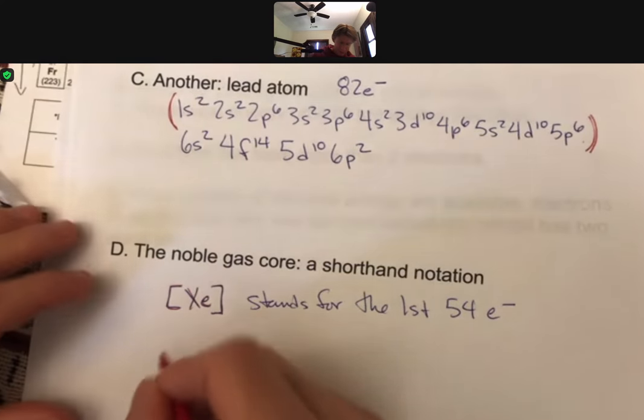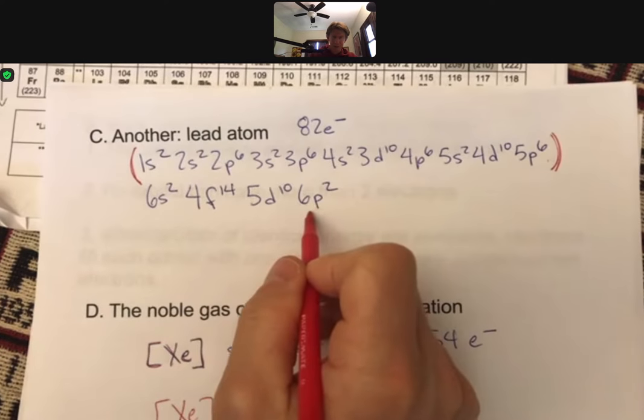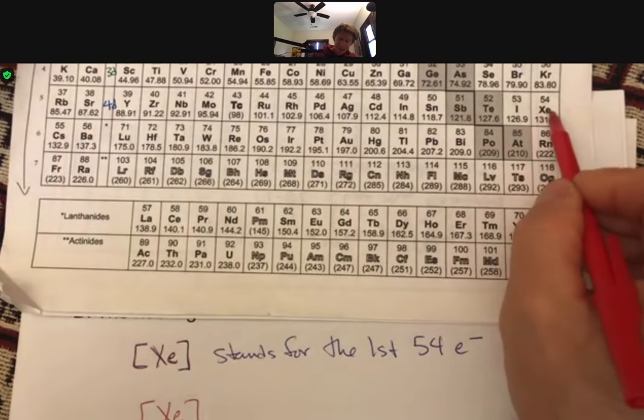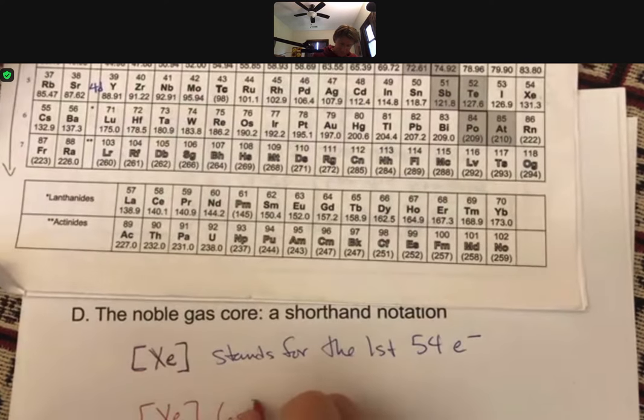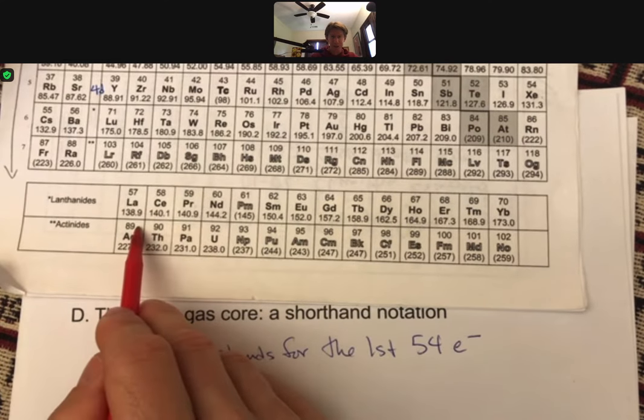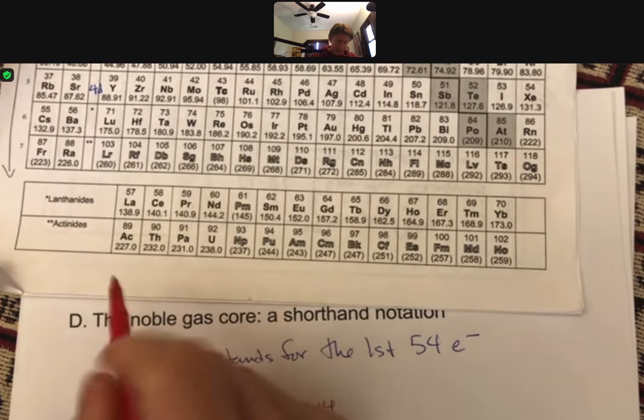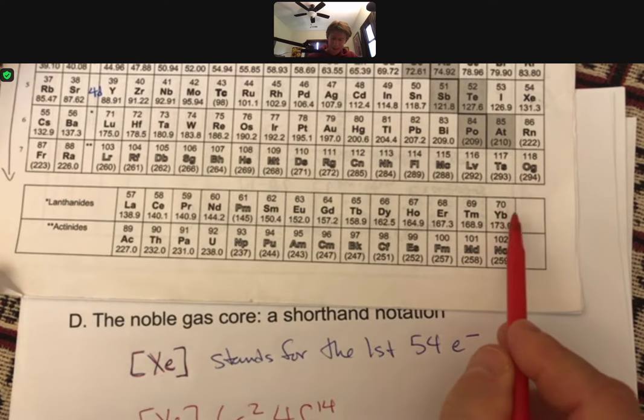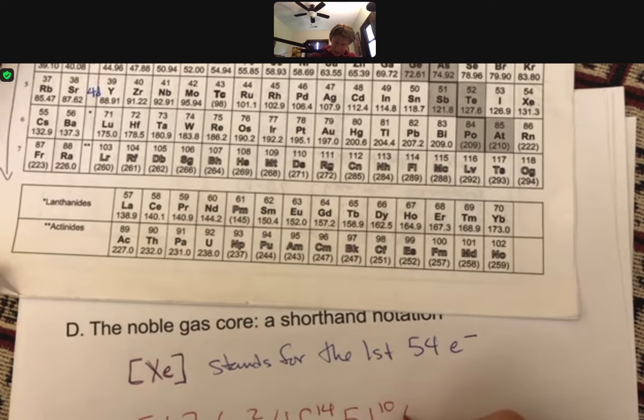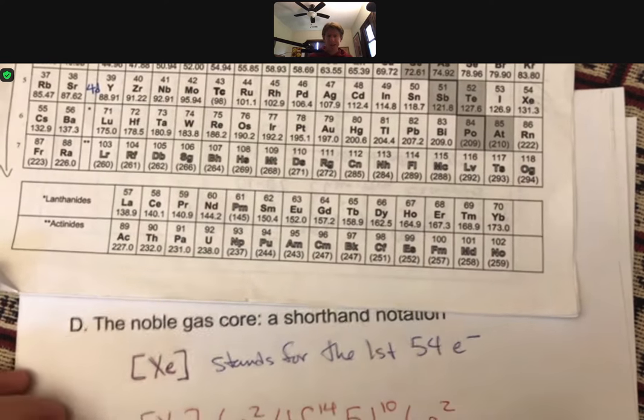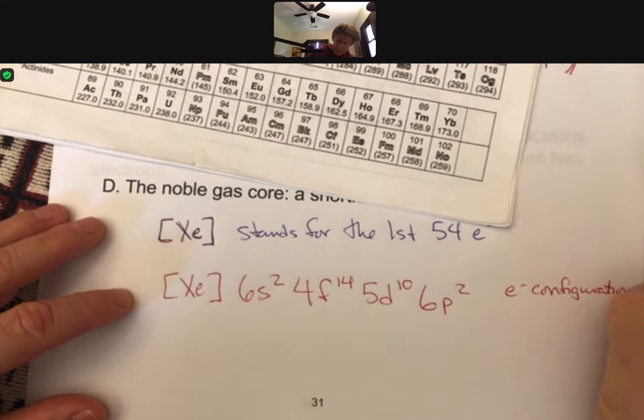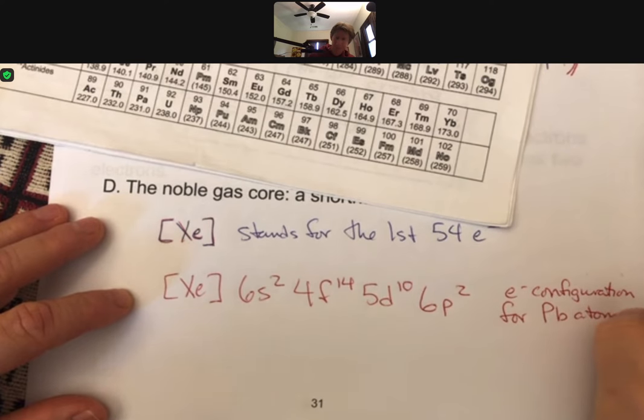And that's xenon. So we can write xenon, and then the rest of this, which we can do because here's lead, here's xenon. So we go back to xenon. Ding. Now we know we're in the 6s area. There's only two of them. Asterisk means go down to the lanthanides, but really the F area as we know it. This is 4F. And you hit the other end of the 4F area. 70 then goes to 71. 71 to 80 is going to be 5d10, and 6p2. So this is the electron configuration for lead atom with a noble gas core.